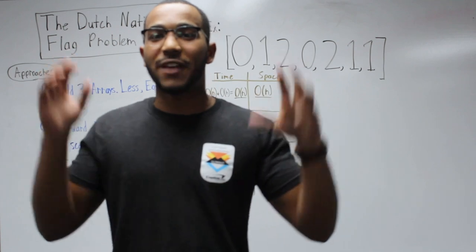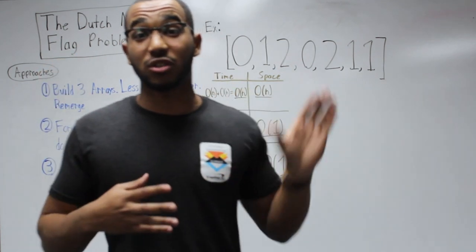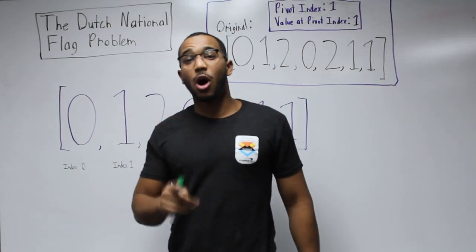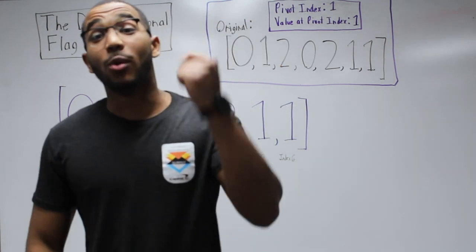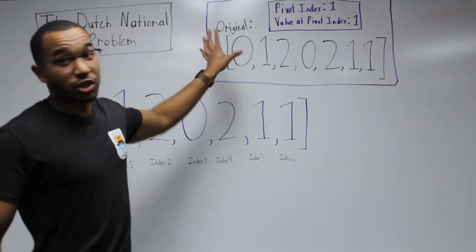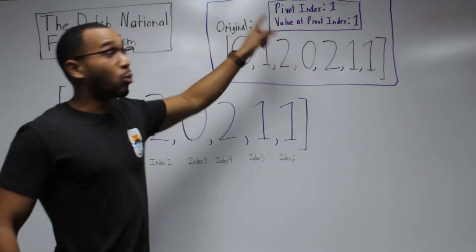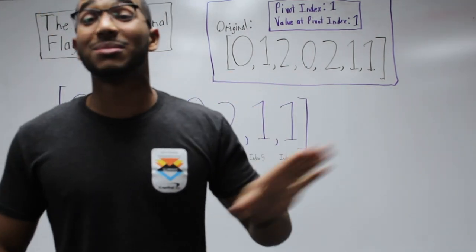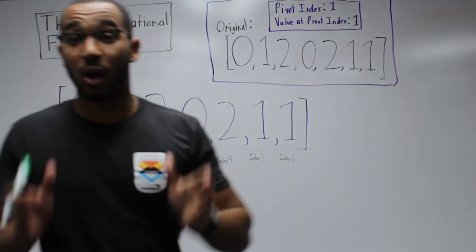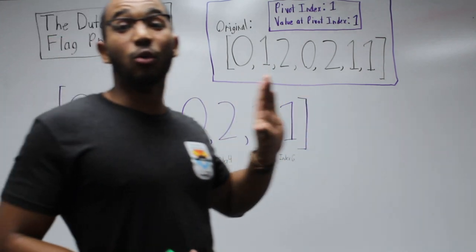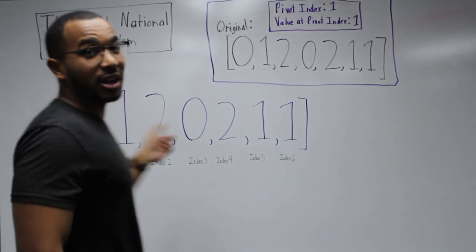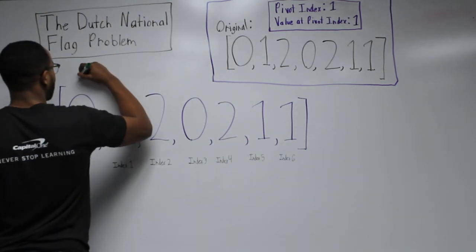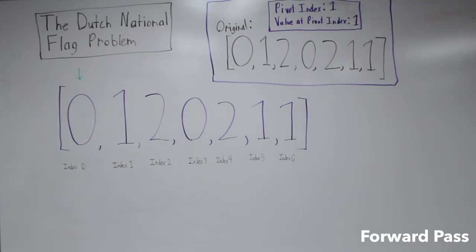We'll use a placement index to repartition during our forward and backward passes to stay linear in time. Let's walk through it. Our pivot index is index one and the value at index one is one, so we're pivoting around one: all items less than one go left, items equal to one stay in their section, and items greater than one go right. We keep a placement index pointing to where the next item should go.